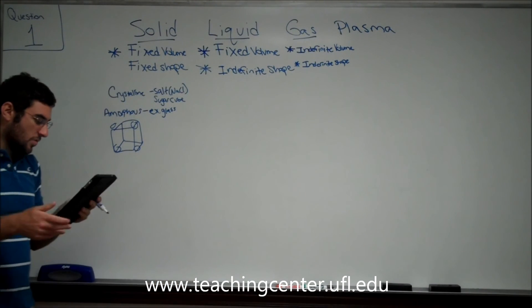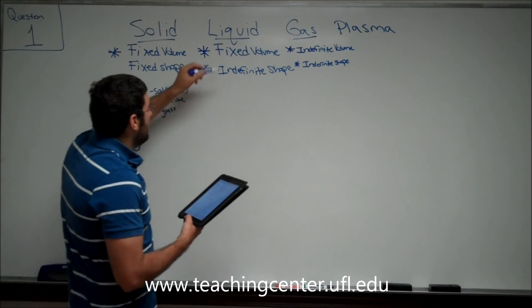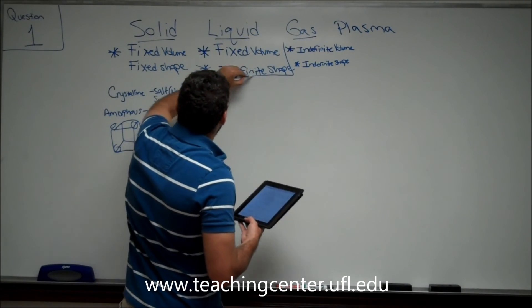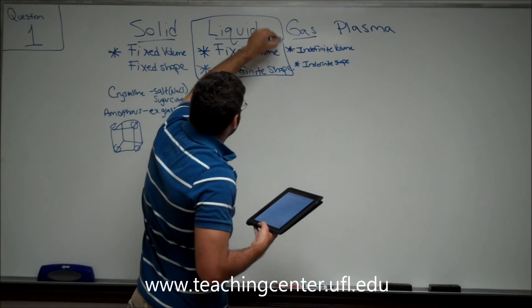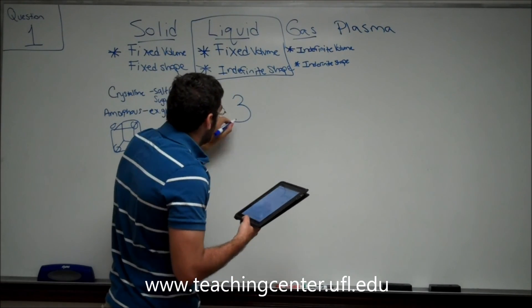But, judging for question one, it gives you the choices crystalline solid, amorphous solid, liquid, gas, and plasma. And because we're looking for an indefinite shape and a fixed volume, the answer to question one is liquid. Answer choice number three.